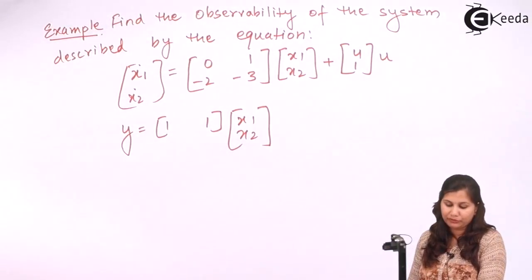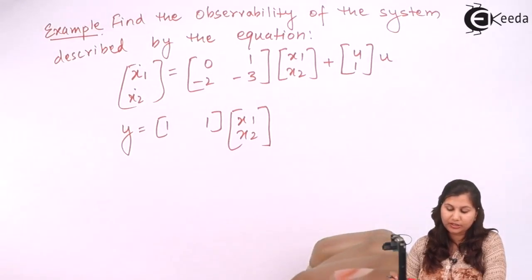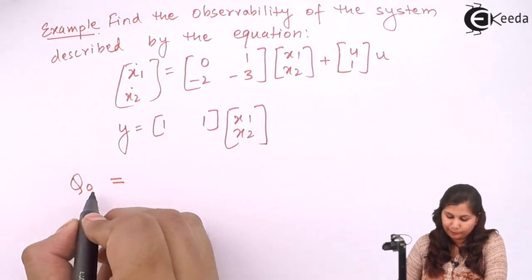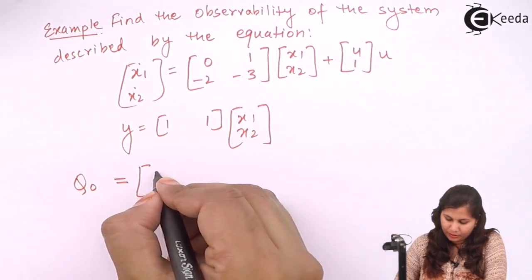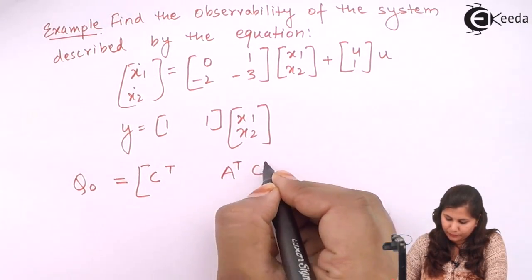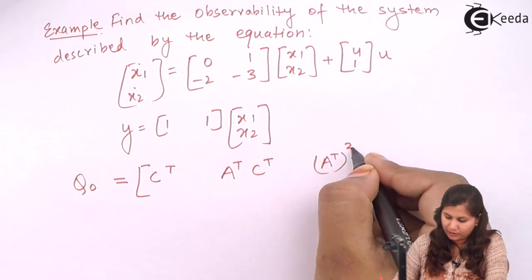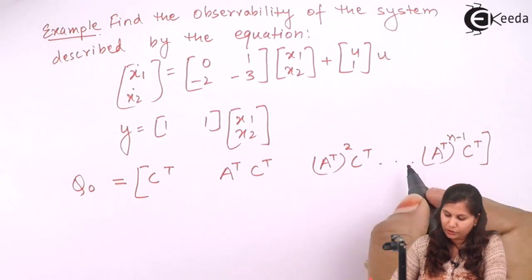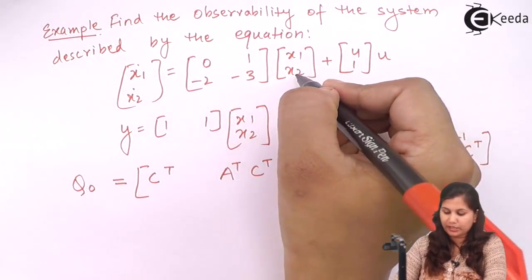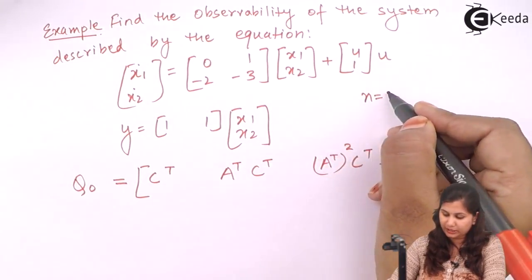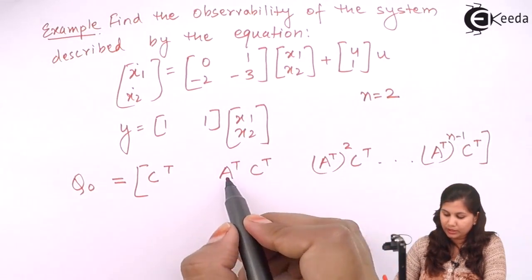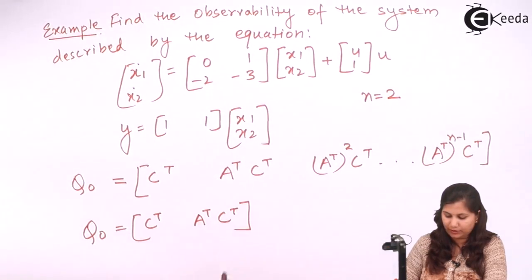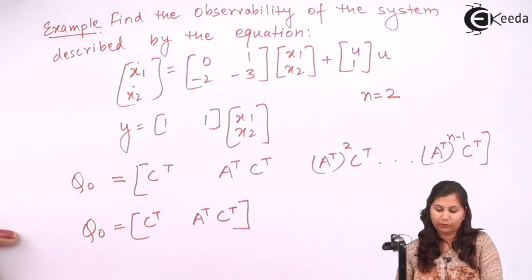We have to determine the observability of the system whose equations are given to us. The observability test matrix Q₀ is given by [Cᵀ, AᵀCᵀ, (Aᵀ)²Cᵀ, ..., (Aᵀ)ᴺ⁻¹Cᵀ]. Here N equals 2 (two state variables), so we calculate this matrix up to Cᵀ and AᵀCᵀ. The C matrix is given as [1, 1].